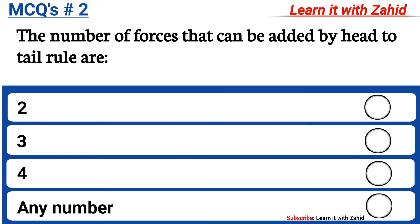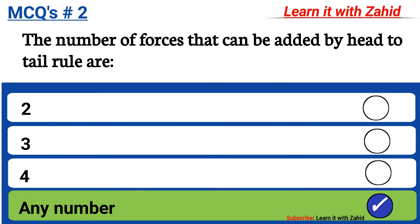The number of forces that can be added by the head-to-tail rule are: option A two, option B three, option C four, option D any number. The correct answer is option D, any number.